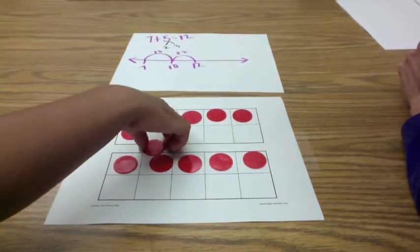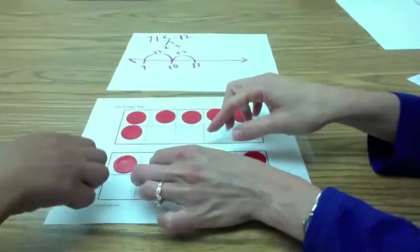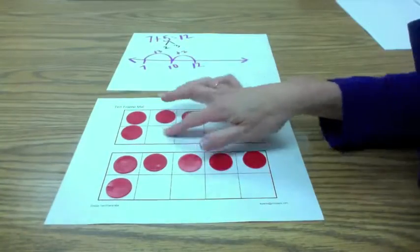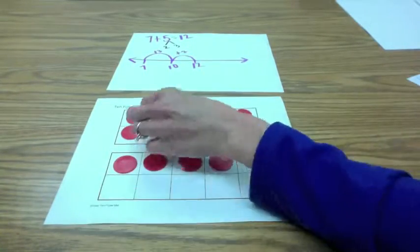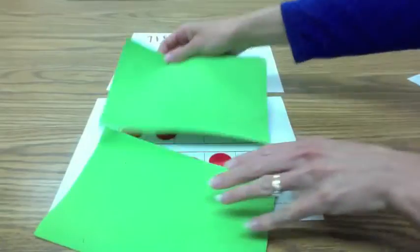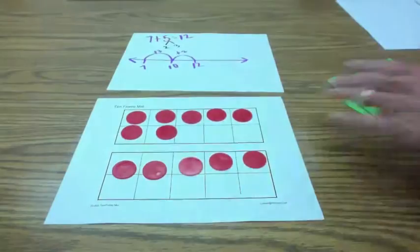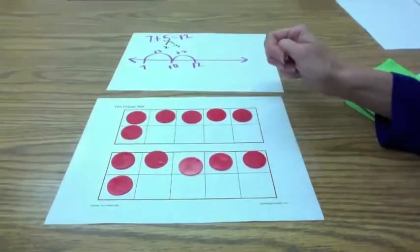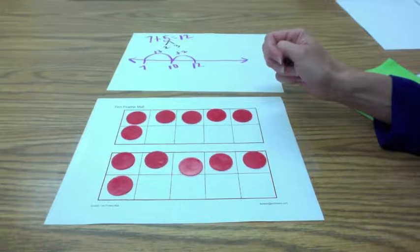And that looks like 6 plus 6. It's hard to pick up, huh? There you go. So in your mind, when I showed it to you quickly, and you saw the 7 and the 5, you could have imagined one going down here. Uh-huh. And you just know 6 plus 6 is 12? Yeah. Great.